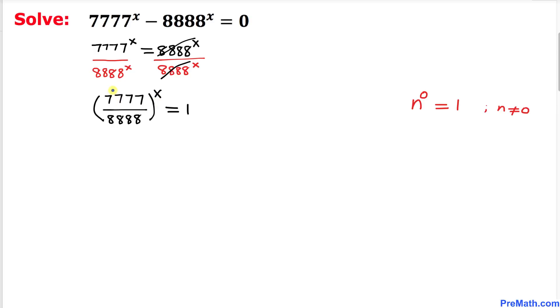Now we know that we are dealing with this whole fraction. So therefore we can write this 1 as 7777 divided by 8888, whole power 0, equals to 1.